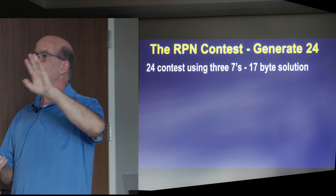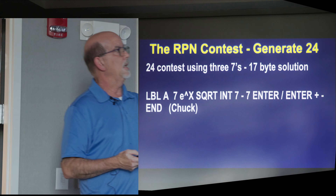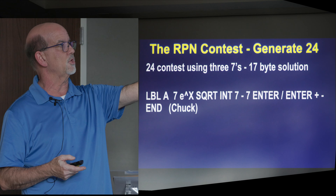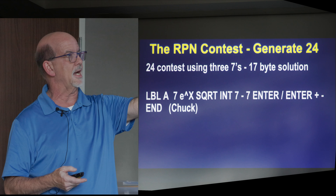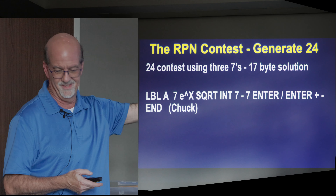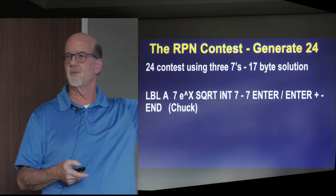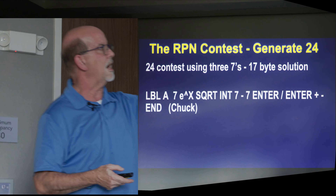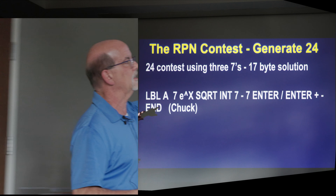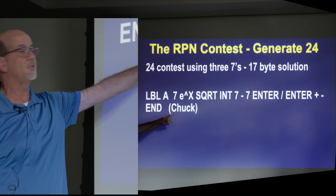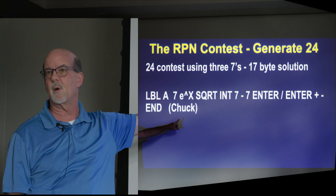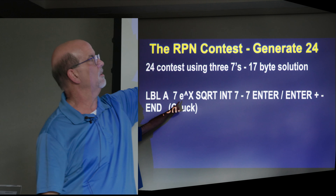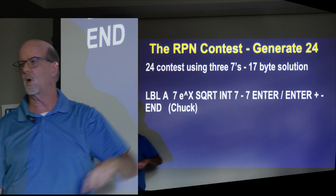This one is: 7, e to the x, square root, integer, 7 minus 7, enter, divided by, enter, plus minus, end. See what I'm talking about with convoluted ideas? But you get to 24 with this. That's a good question — who thought of that? Chuck, wave your hand — he's the one whose mind works in this devious way. You're looking at stuff using e to the x and square root just trying to get to 24, but that was a 17-byte solution.